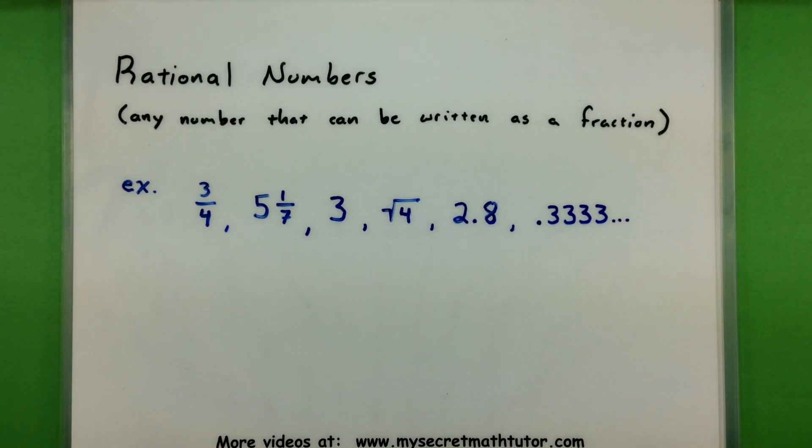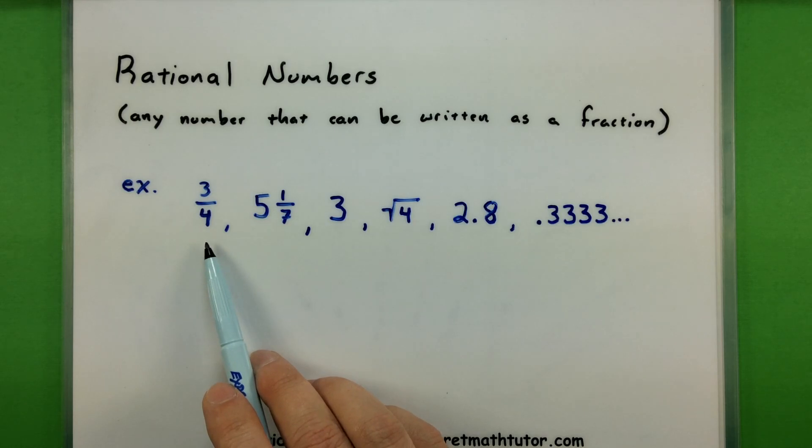The next really big group of numbers is our rational numbers. Now these are any number that can be written as a fraction. So it makes it a little bit more difficult to try and list these out. But one thing you want to recognize is that if it's already a fraction,